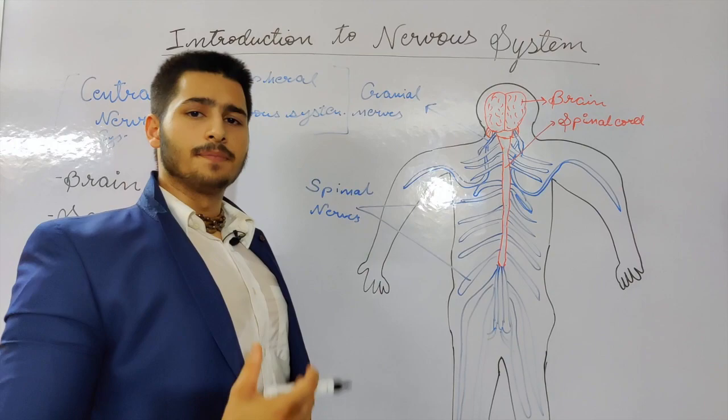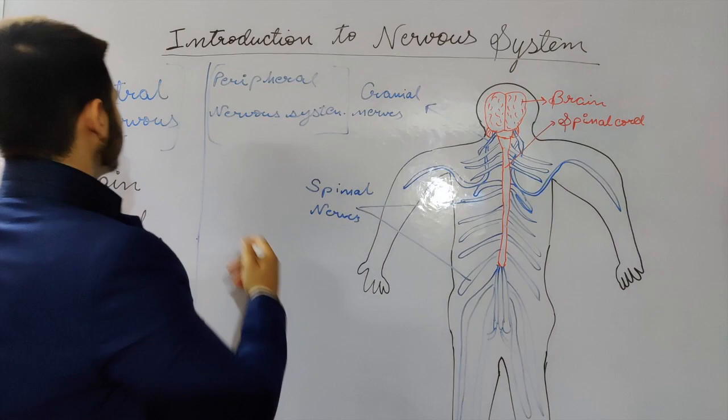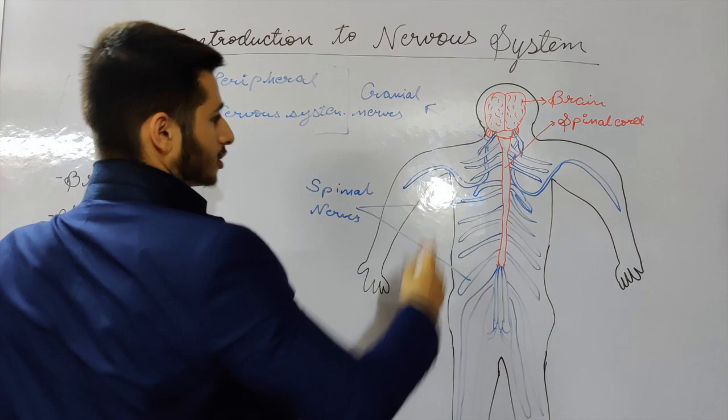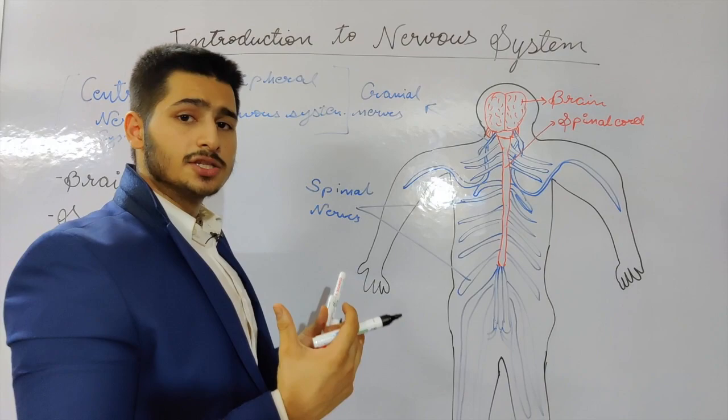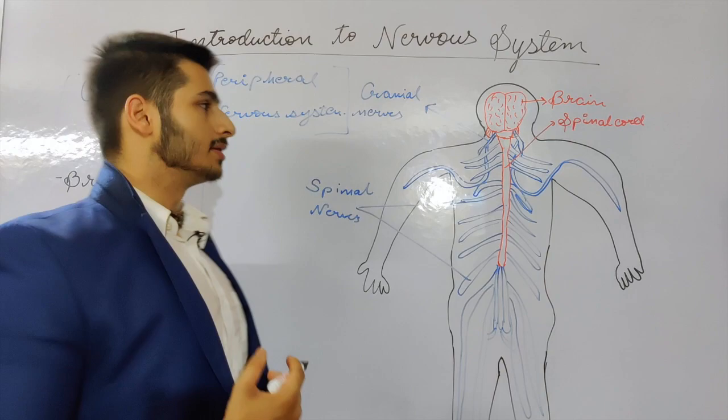The peripheral nervous system contains structures that lie outside the central nervous system. CNS is an abbreviation for central nervous system and PNS is an abbreviation for peripheral nervous system. The structures of the PNS lie outside the CNS and they connect the CNS — that is, the brain and the spinal cord — to the rest of the body.